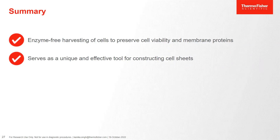Overall, UpCell surface can be used to fabricate cell sheets which can be targeted on the damaged area and used for repair and regeneration research. The harvested cell sheet preserves ECM, cell-to-cell junctions, and cell-ECM junctions, which are very important for effective cell therapy. We do not need any dissociation enzymes for harvesting the cells, so we ultimately preserve the cell viability and the surface marker expression.